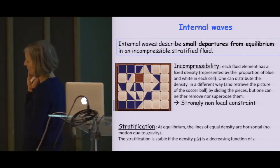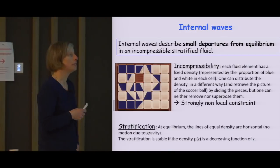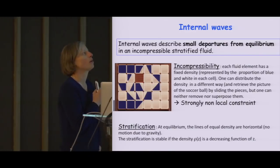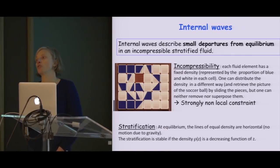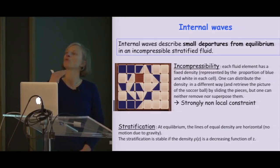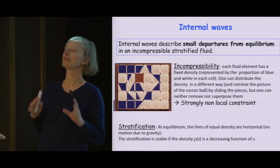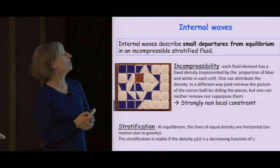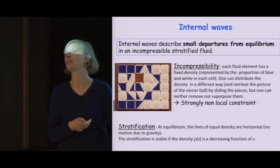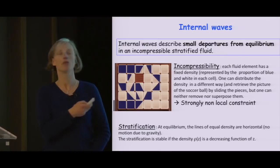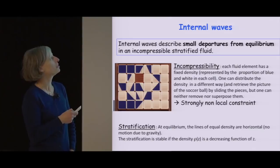Internal waves describe small departures around equilibrium in an incompressible fluid, but this incompressible fluid has a density which is not homogeneous — it is what is called stratified. I will try to explain very roughly what it means to be incompressible and to be stratified. Of course it would be shorter to write just the equation 'divergence of U equals zero,' but I will try to explain the intuition behind this incompressibility constraint.